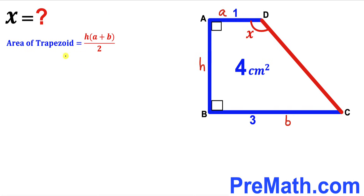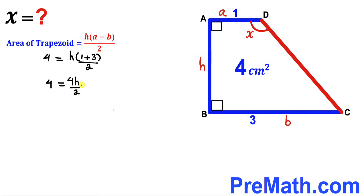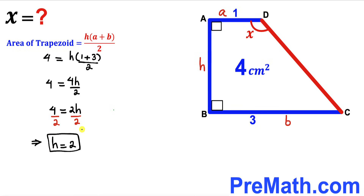Let's fill in the blanks. The area four equals height h times (one plus three), all over two. One plus three gives us four, so four equals four times h divided by two, which simplifies to four equals two times h. Dividing both sides by two, our height h turns out to be two centimeters.